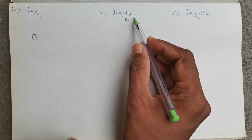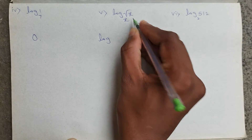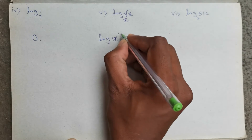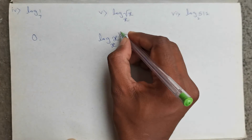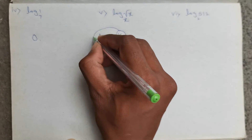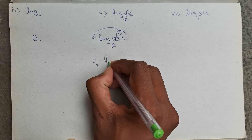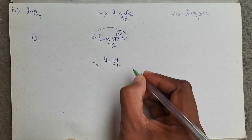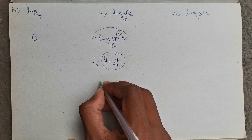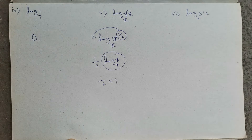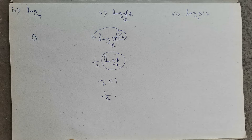Next, log √x base x. Log √x can be written as x power 1/2, base x. Now this power 1/2 will go as it is: 1/2 into log x base x. This log x base x value is 1. So 1/2 into 1 is nothing but 1/2.